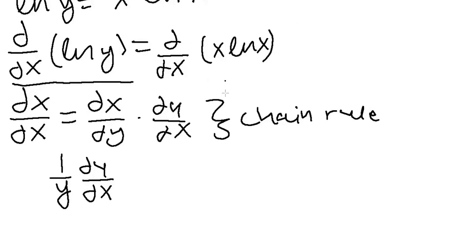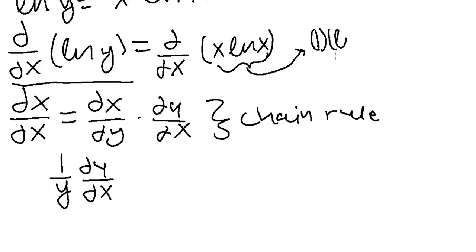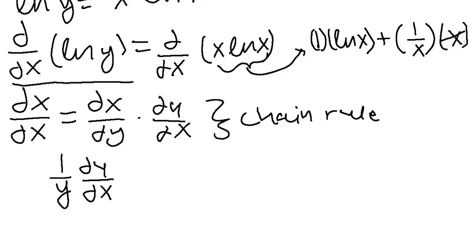Now let's simplify the derivative with respect to x of x times the natural log of x. Using the product rule, this is the derivative of x, which is 1, times the natural log of x, added to the derivative of the natural log of x, which is 1 over x, times x. This simplifies to the natural log of x plus 1.